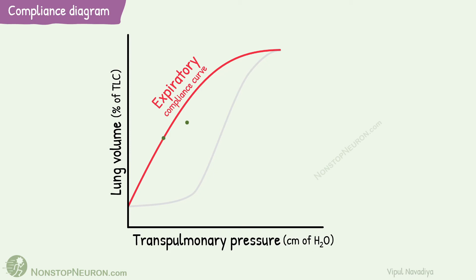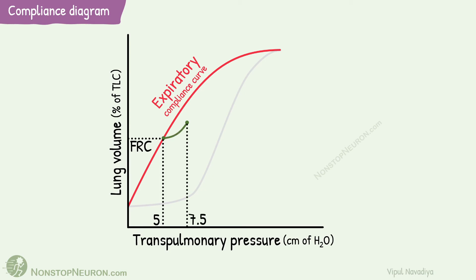During normal breathing, parameters move back and forth between two points. The first point is after restful expiration, where transpulmonary pressure is about 5 cm of water and lung volume is at functional residual capacity. After inspiration, transpulmonary pressure increases to about 7.5 cm of water and lung volume increases by the tidal volume. After expiration, it comes back to the starting point. During normal breathing, hysteresis is much less.